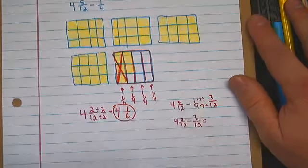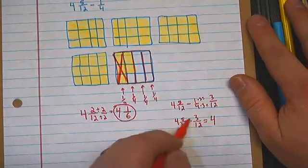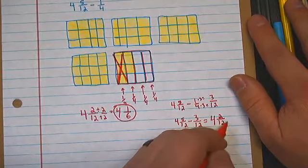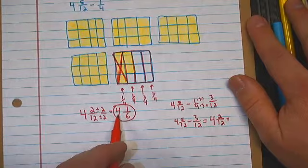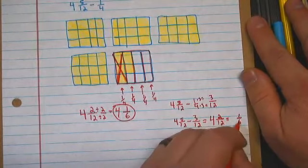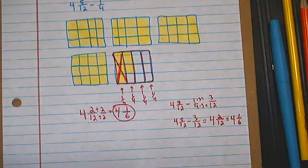So let's take the four and five-twelfths minus three-twelfths. And that's going to get me four wholes, and five minus three is two, two-twelfths. And as we proved earlier, two-twelfths is the same thing as one-sixth, so it's four and one-sixth. That's good.